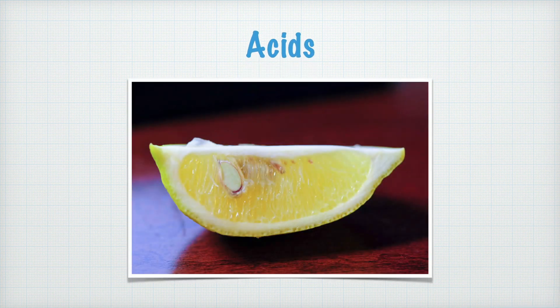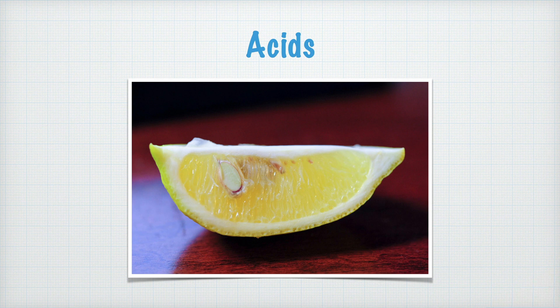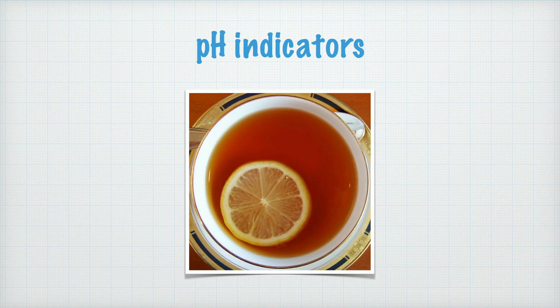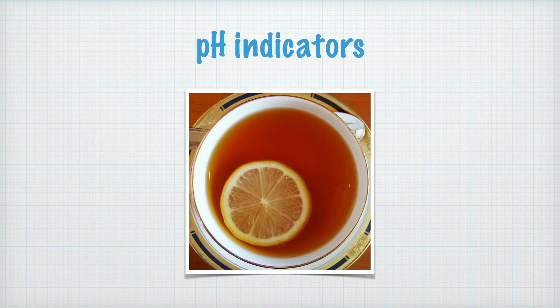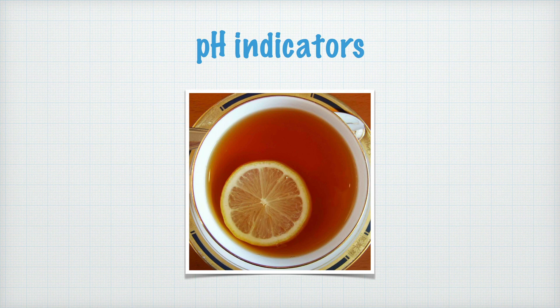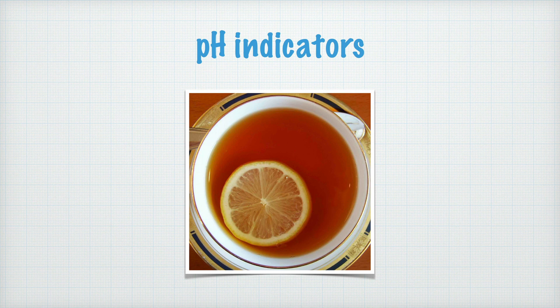You can determine whether a solution is acidic by tasting it. This is not something you can do in a lab, but instead you may use a pH indicator. Common black tea may actually work as an indicator. You can try it yourself by putting a slice of lemon in your tea. The tea's color becomes lighter, not because it is diluted, but because the acid in the lemon changes its color.